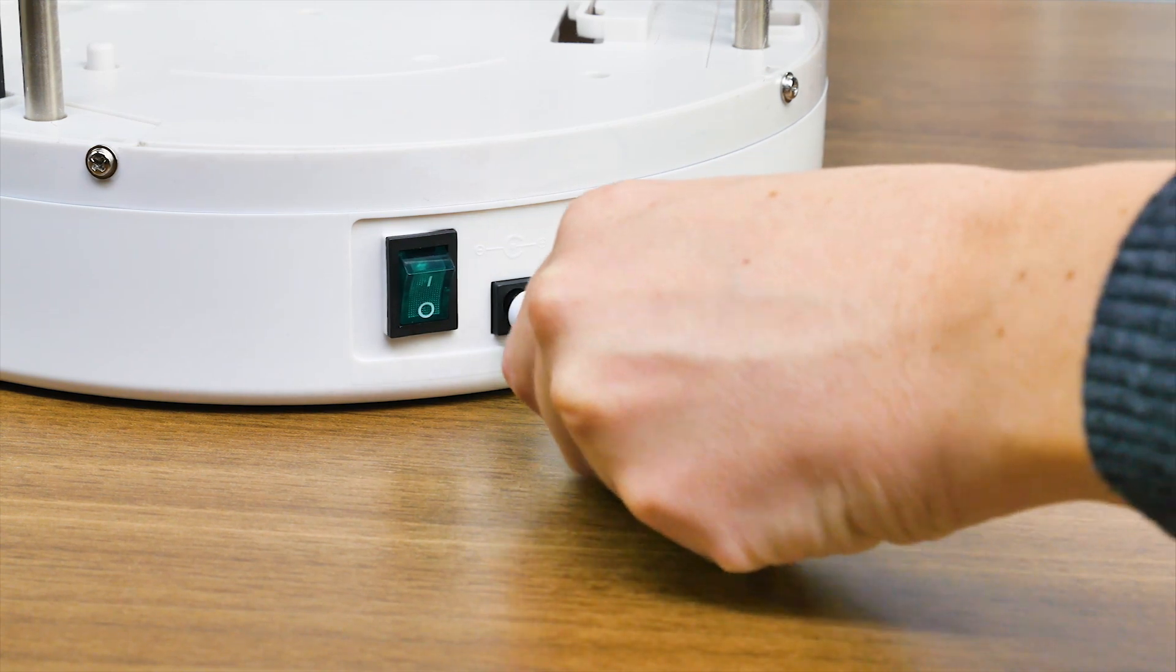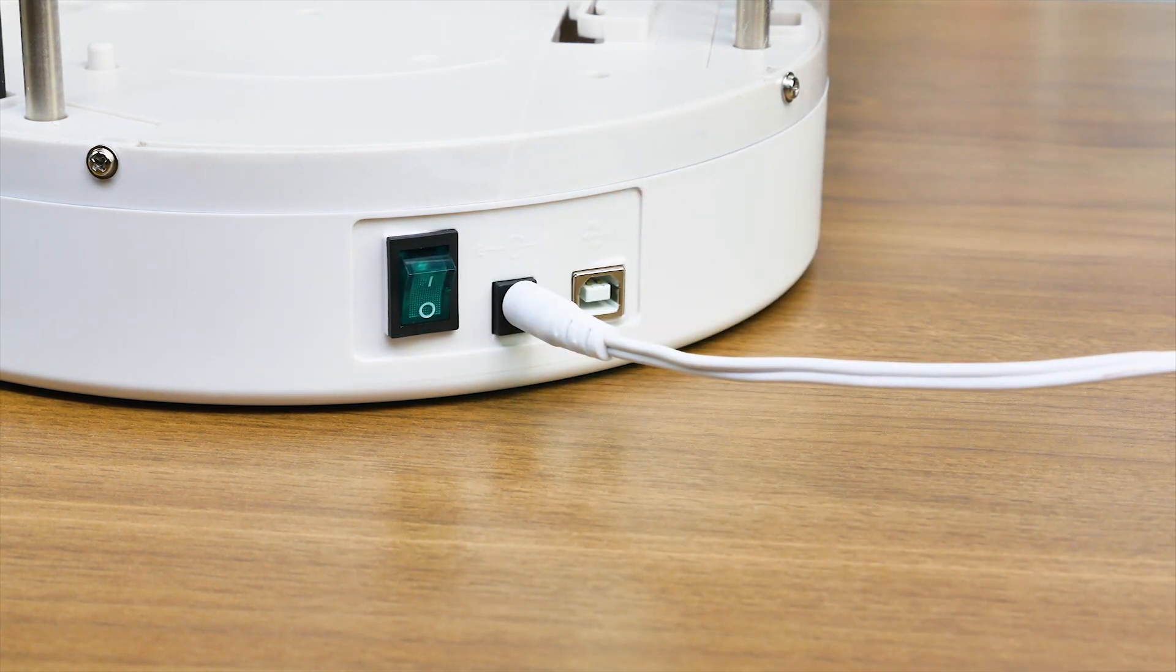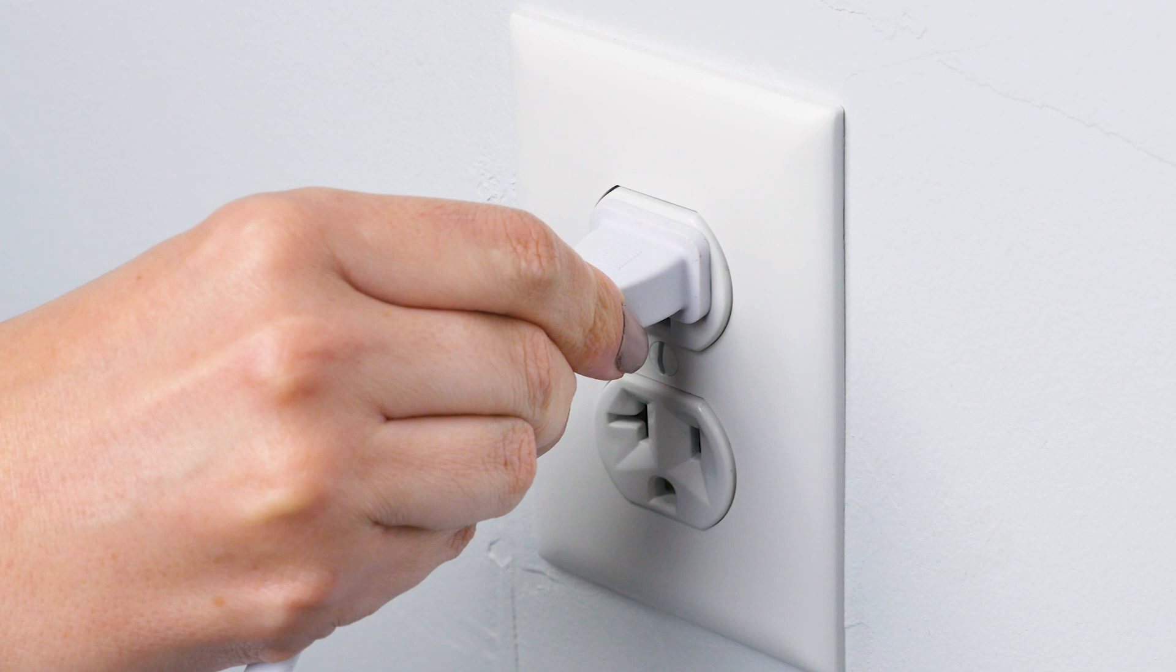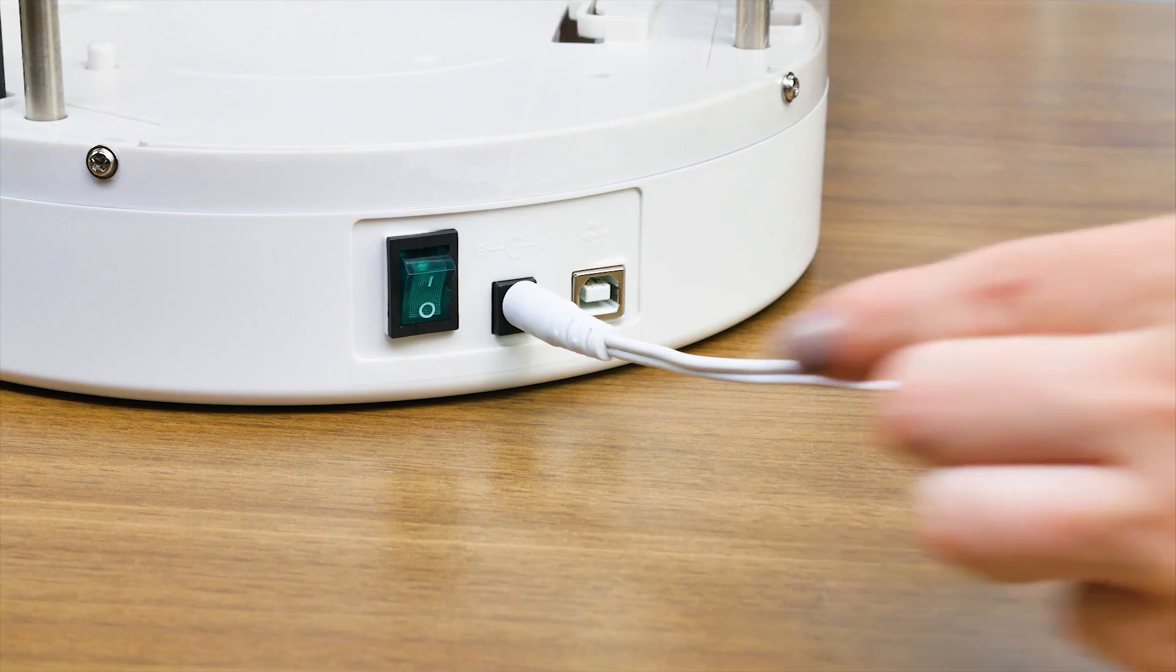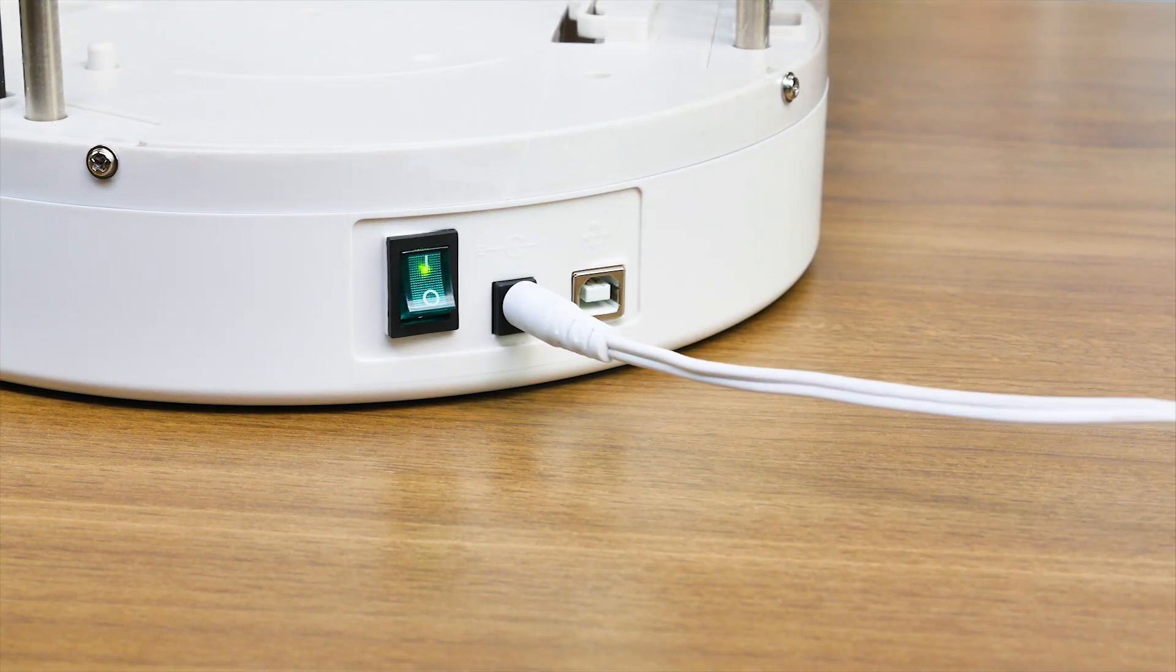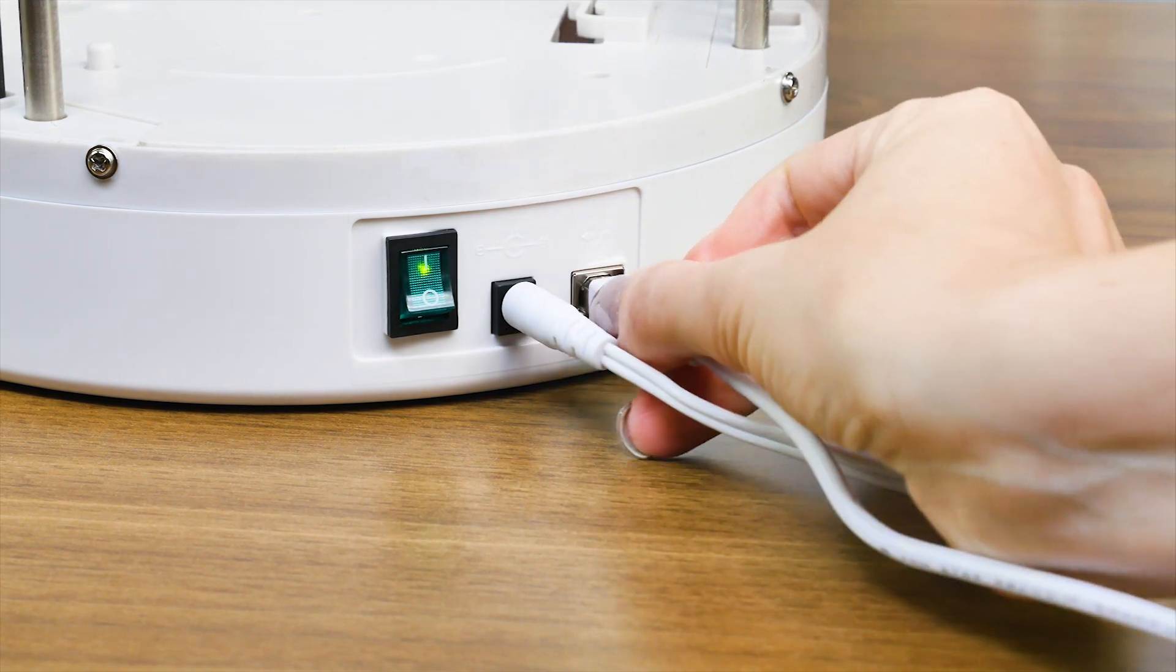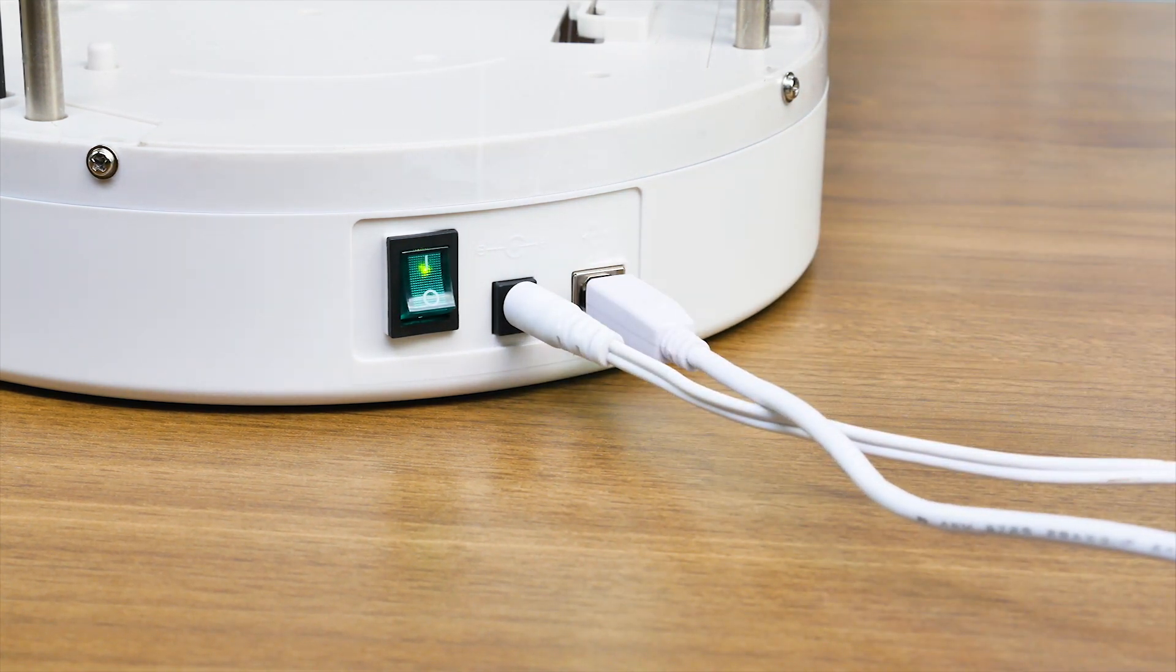Plug the included AC adapter into the right-hand side of the Alta and then into a wall socket. Then connect the Alta to your computer using the provided USB cable.